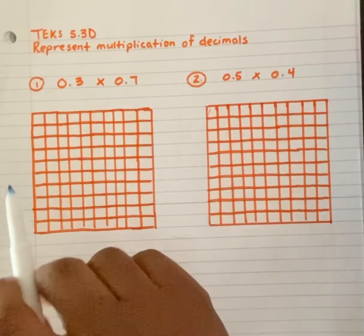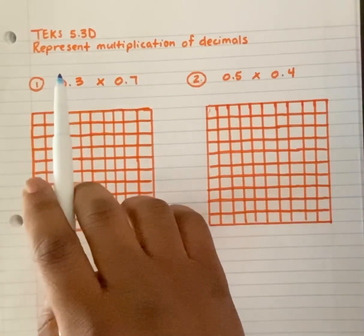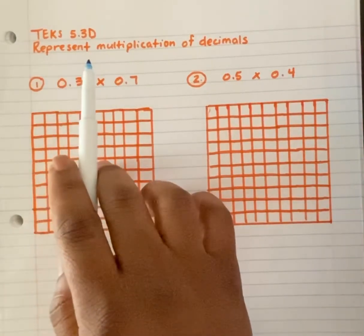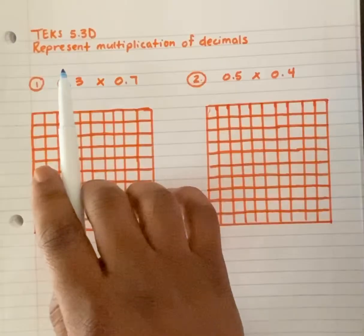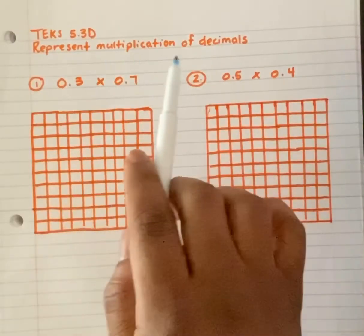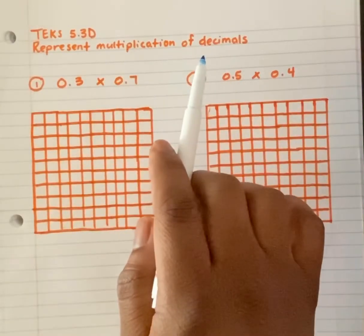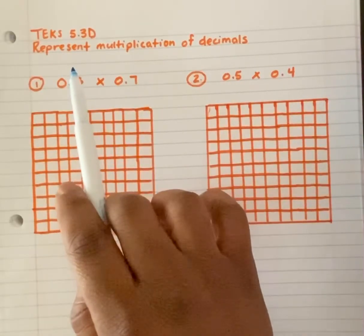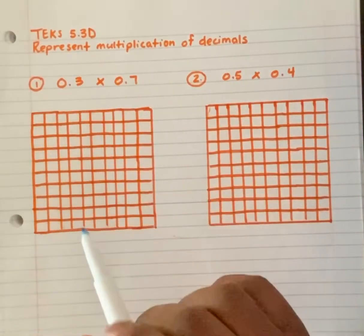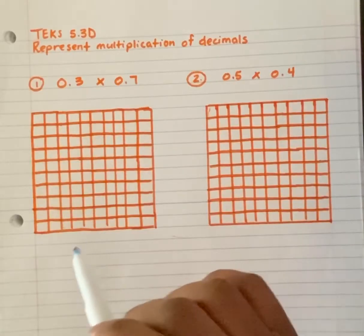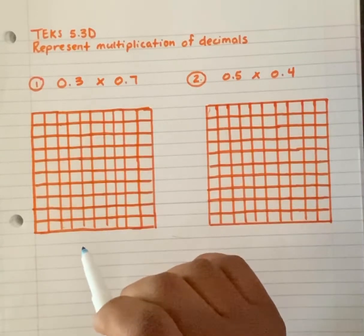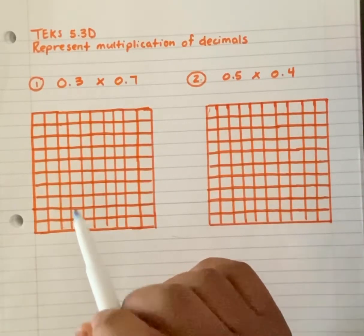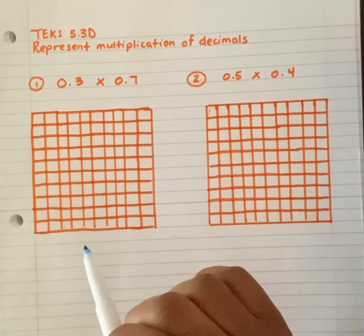Today we're talking about TEKS 5.3D, Represent Multiplication of Decimals. The key word here is represent, meaning you have to find the picture that represents the product for this multiplication problem.